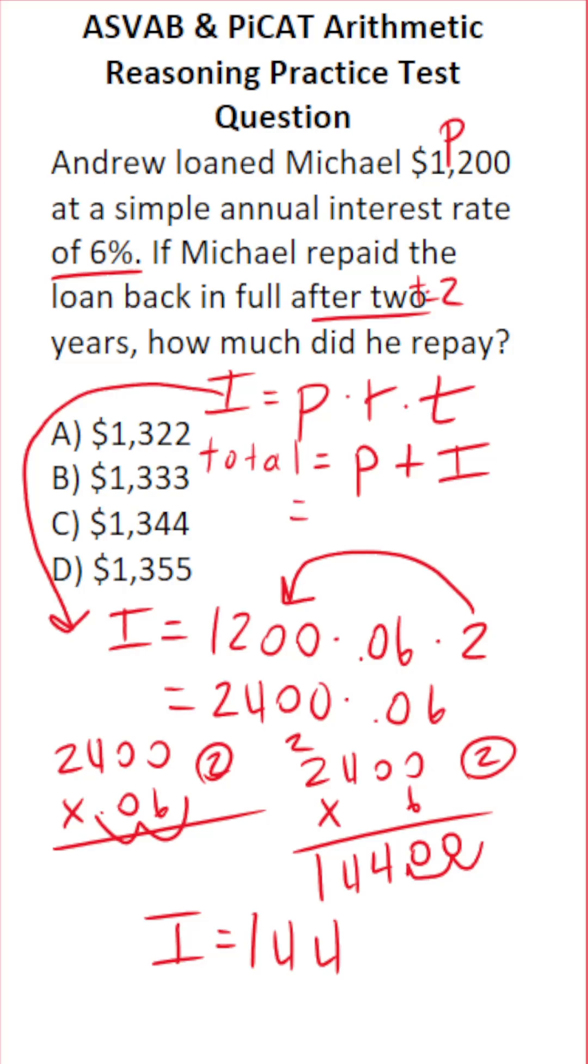What's the total he's going to pay back? That's the principal—the amount he borrowed, $1,200—plus the interest on that loan, which is $144.